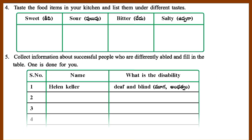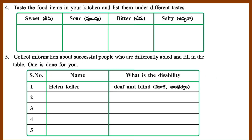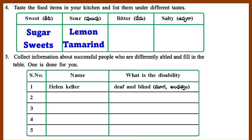Question 4: Taste the food items in your kitchen and list them under different tastes. Sweet: Sugar, Sweets. Sour: Lemon, Tamarind. Bitter: Bitter gourd, Turmeric. Salty: Salt.